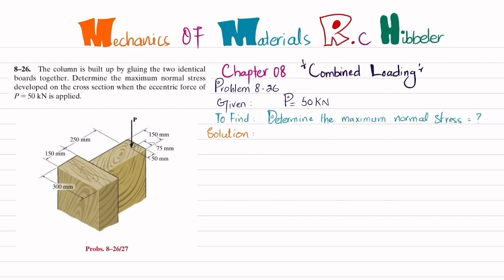Let's start with the solution. The first step is that we do not know the centroid of the cross section, so we will first find the centroid of the section.